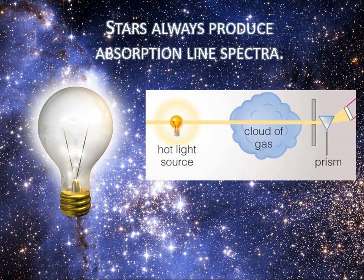Stars always produce absorption line spectra. The core of the star is like the light bulb. Nuclear reactions in the core produce photons of all energies. The star's atmosphere is a gas cloud composed mostly of hydrogen, some helium, and a lesser amount of heavier elements.